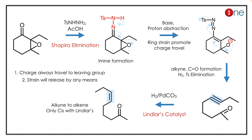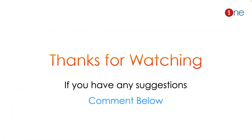Further, since tosylate is a very good leaving group, you have alkyne formation. With palladium carbonate — which is Lindlar's catalyst — Lindlar's hydrogenation occurs, so the triple bond becomes a double bond. You have cis double bond formation. It's a very stereoselective reaction. The concept outlined here is Shapiro elimination; the reaction converts a ketone into an alkene.